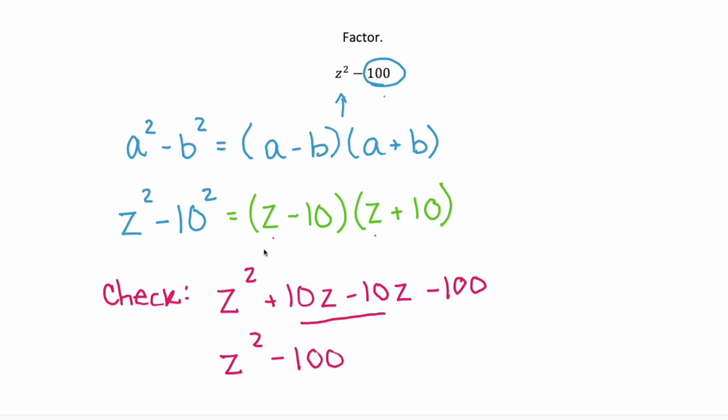So our factored form for that difference of squares is (z - 10)(z + 10).